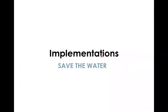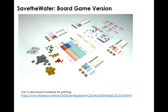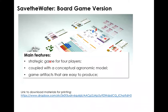The game is called Save the Water and we have made two versions during our project. The first is a board game, and later on we made a digital one. The board game has three main features. The first feature is that this game is a strategic game for four players, very much like a Monopoly game, and it is coupled with a conceptual agronomic model based on Guantao's agriculture practice. All the game artifacts are mainly based on cardboards, so it's very easy to produce. We also included a link where you can download the templates, print them out yourself, and cut them into pieces. Full instructions are also available.